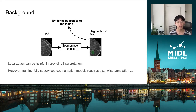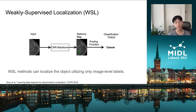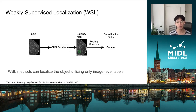For example, in these mammography images, if we have a segmentation model to highlight lesions — shown in green here — to associate that with breast cancer diagnosis, then we are more confident about the model. However, training such a fully-supervised segmentation model requires pixel-wise annotation, which is very expensive and sometimes even not available. Under such circumstances, weakly-supervised localization methods can be used to localize objects utilizing only image-level labels. This is inspired by pioneer work which reveals that the high-level feature maps of convolutional neural networks reveal the most influential regions responsible for the model prediction.